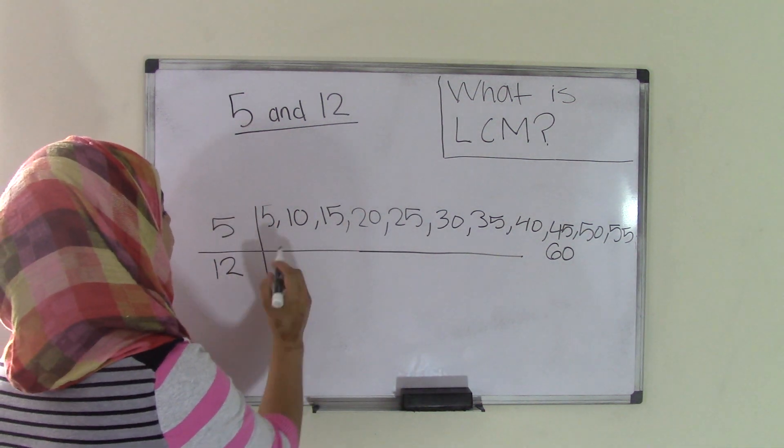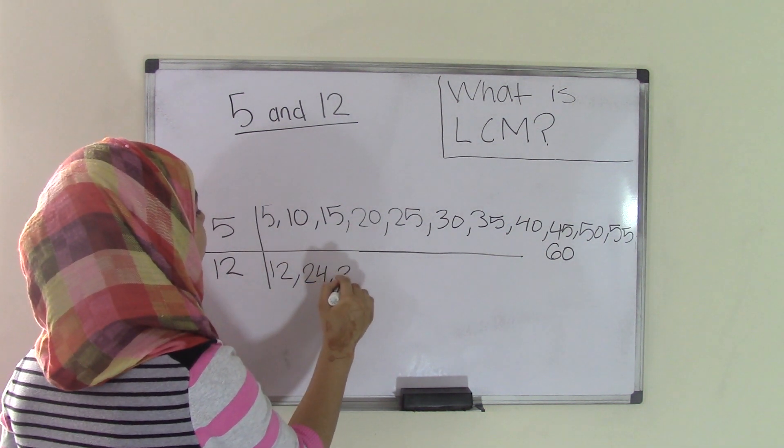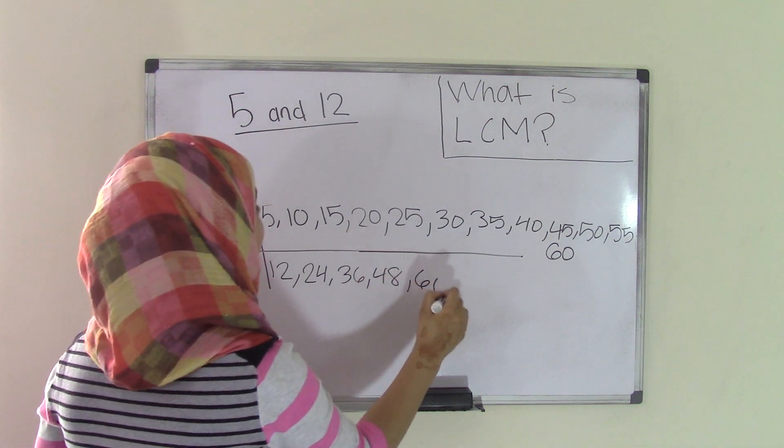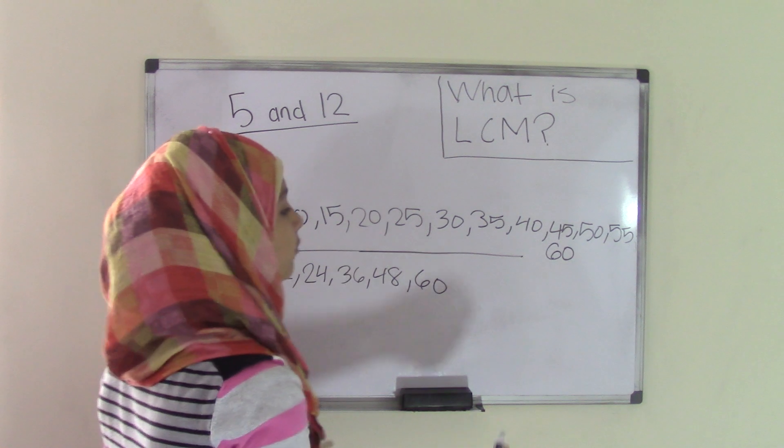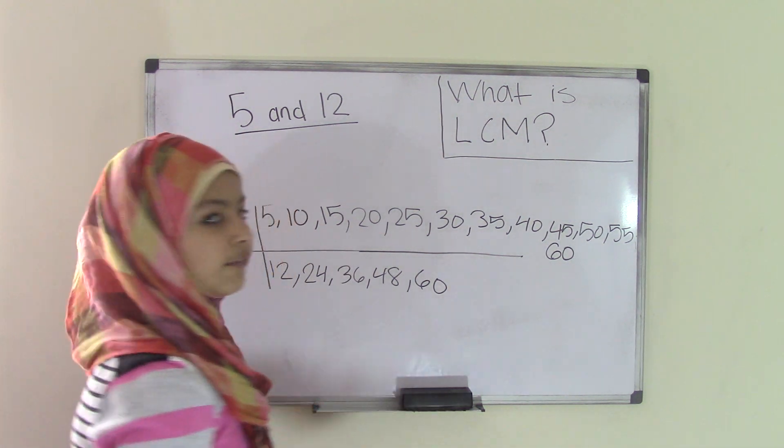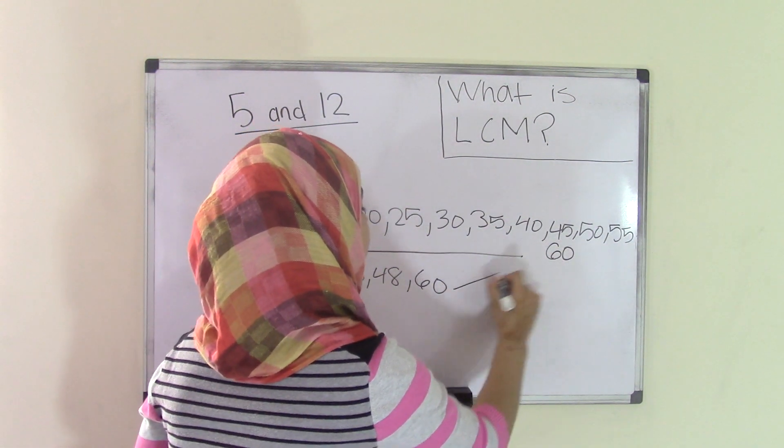And now I'm just going to do the same thing for 12. So 12 times 1 is 12, times 2 is 24, times 3 is 36, times 4 is 48, times 5 is 60. Now if you take a look over here, I really don't need to go on because I have just found my first matching pair of numbers that are common, my first pair of common multiples, which is 60 and 60.